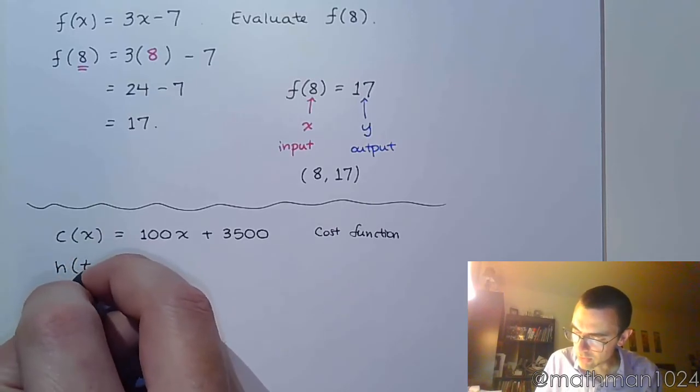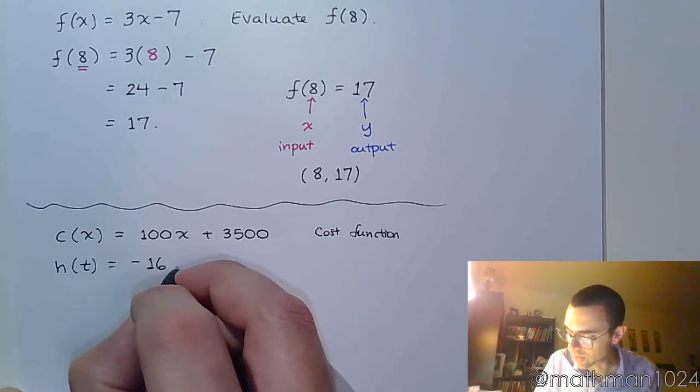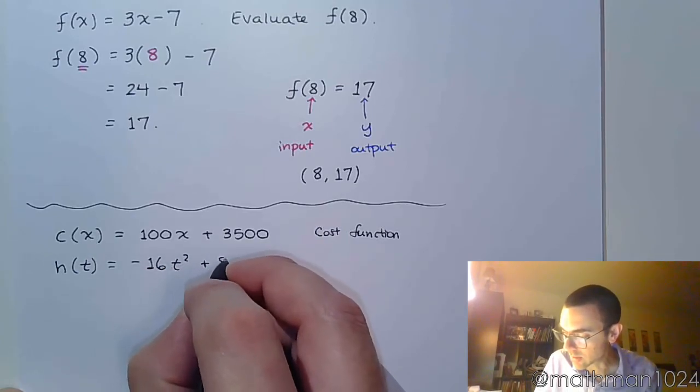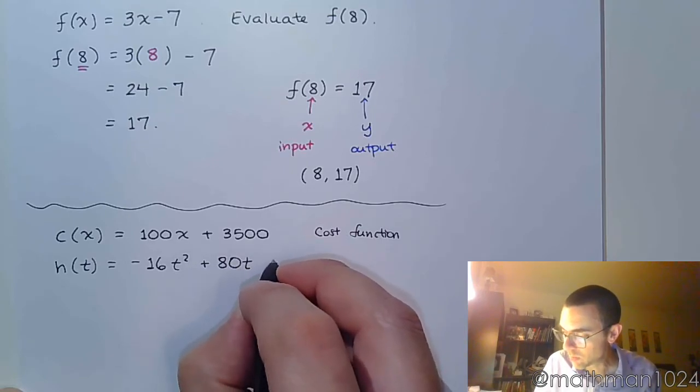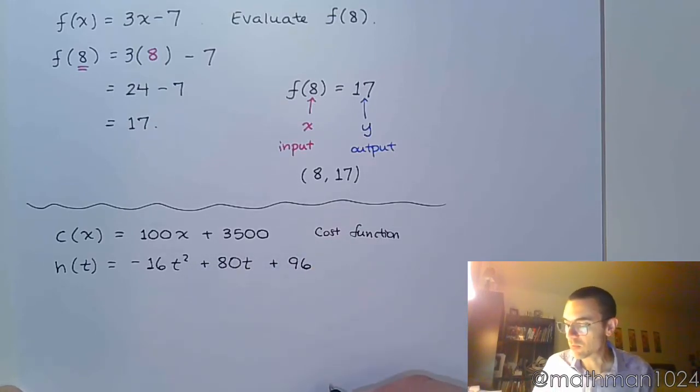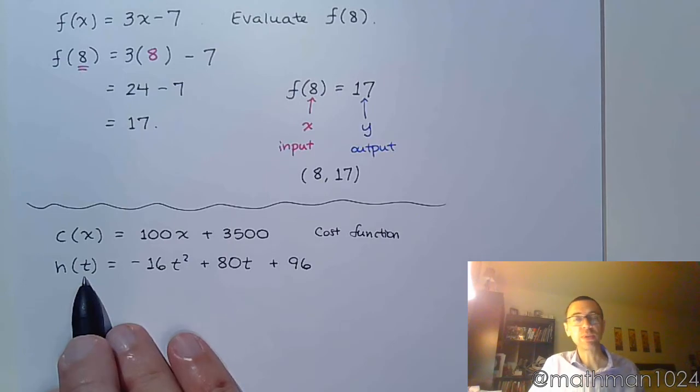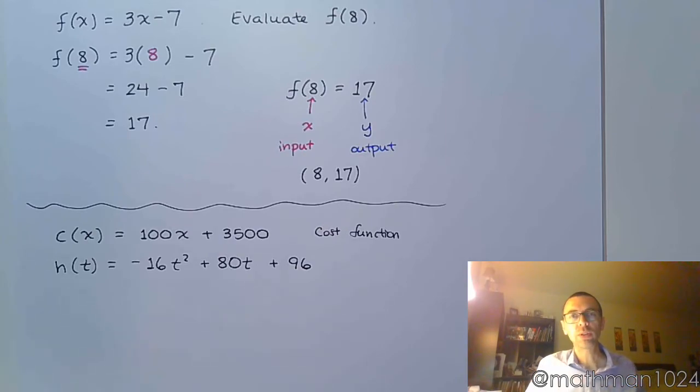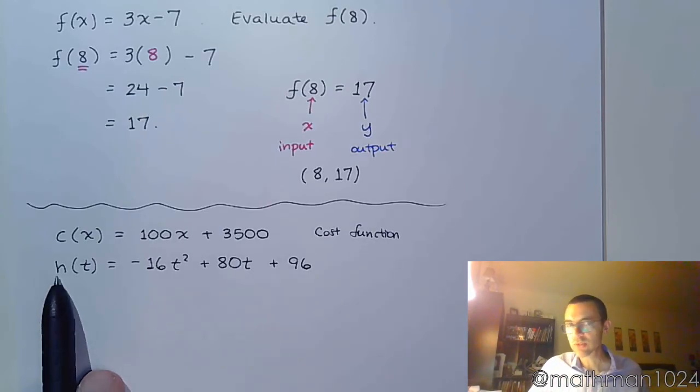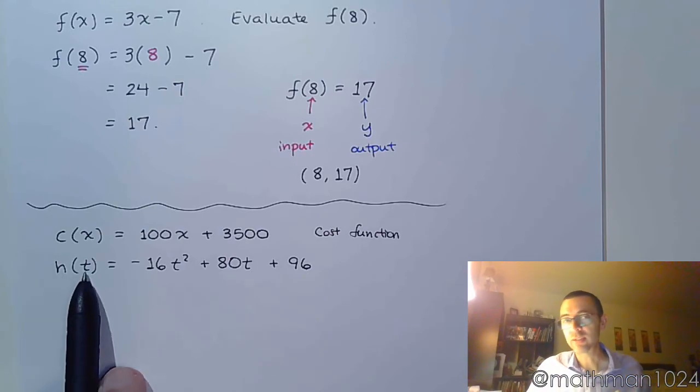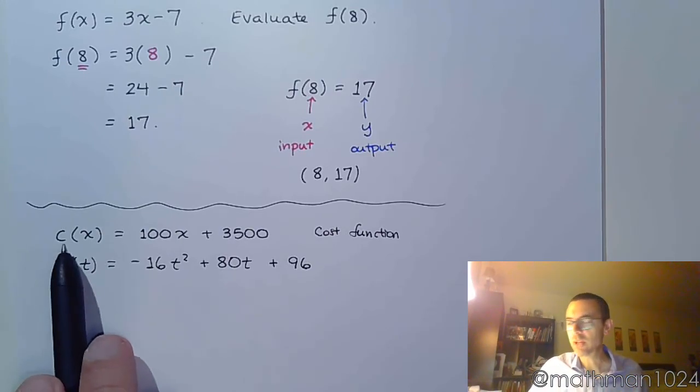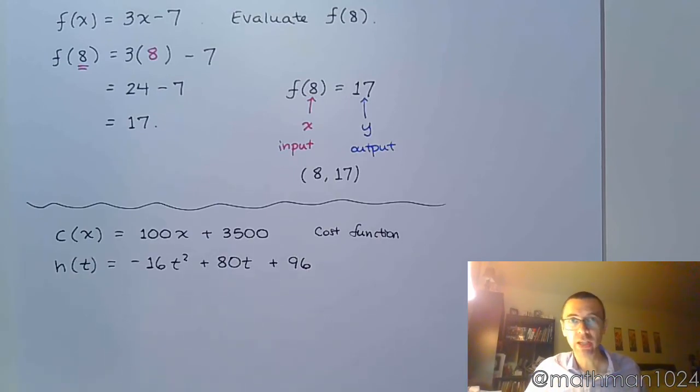Sometimes we have this. We might use h of t. And maybe that looks like this. So, negative 16t squared plus 80t plus 96. And this function can be describing the height of an object t seconds after it's been tossed into the air. So, we know that every single point in time, there's only going to be one location. One distance from the ground up to that object. So, it's going to be a function. And so, sometimes we use h so that we really see that, okay, we're talking about the height based on time, t, cost, c, based on some unknown number of items that we're making represented by x. So, it's not always just f and x.